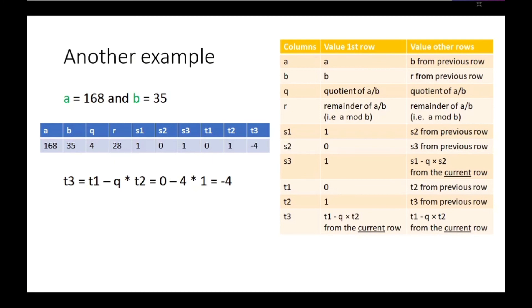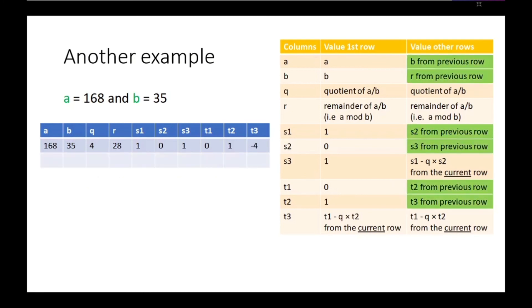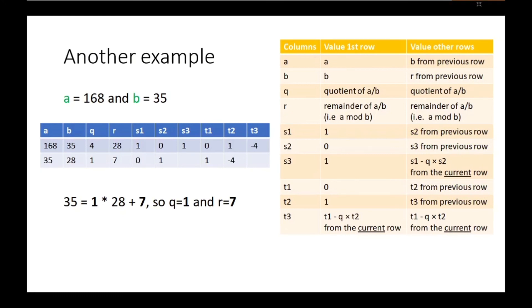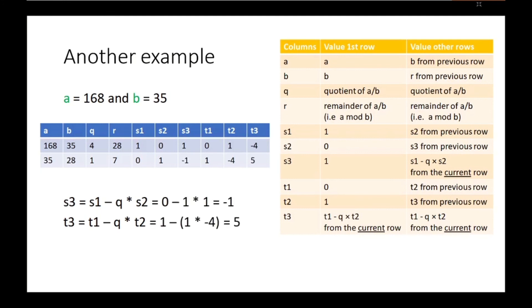Now we are going to add another row to the table and copy B, R, S2, S3, T2, and T3 from the previous row. Since 35 is 1 times 28 plus 7, we have a quotient of 1 and a remainder of 7. Then S3 equals S1 minus Q times S2, and T3 equals T1 minus Q times T2, giving us an S3 of minus 1 and a T3 of 5.